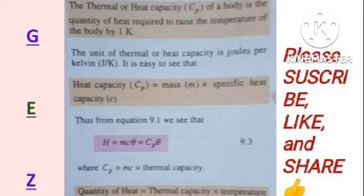The unit of thermal or heat capacity is joules per Kelvin. It's easy to see that heat capacity is equal to mass times specific heat capacity. So when you multiply the mass of a body by its specific heat capacity, you get the heat capacity of that specific body. So Hc times theta is equal to Cp times theta, where C subscript p is the thermal capacity of that substance.